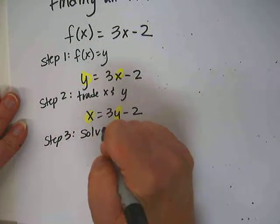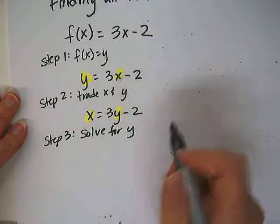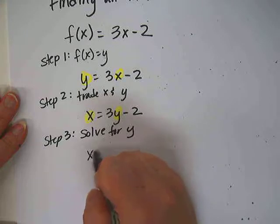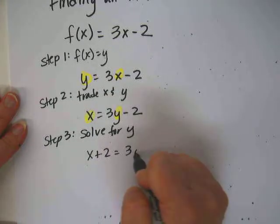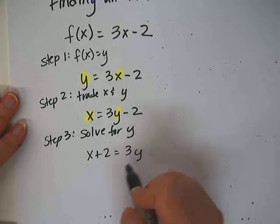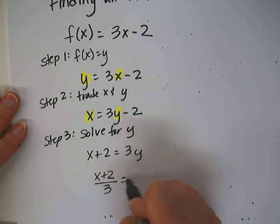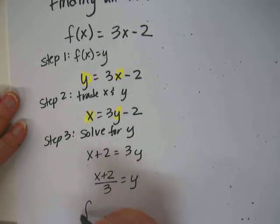Step 3: solve for y. We want to get y by itself. We're going to add the 2, so x + 2 = 3y. Then divide everything by 3, so (x + 2)/3 = y.